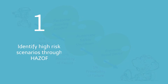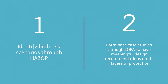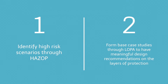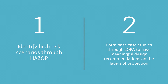As we have discussed, a LOPA is a semi-quantitative method to analyze higher risk scenarios identified in a HAZOP. It forms a base case study by which a PHA team can make meaningful design recommendations on the appropriate layers of protection. At the same time, it is not as burdensome as a full-blown quantitative risk assessment, where a PHA team tends to fall into paralysis by analysis.